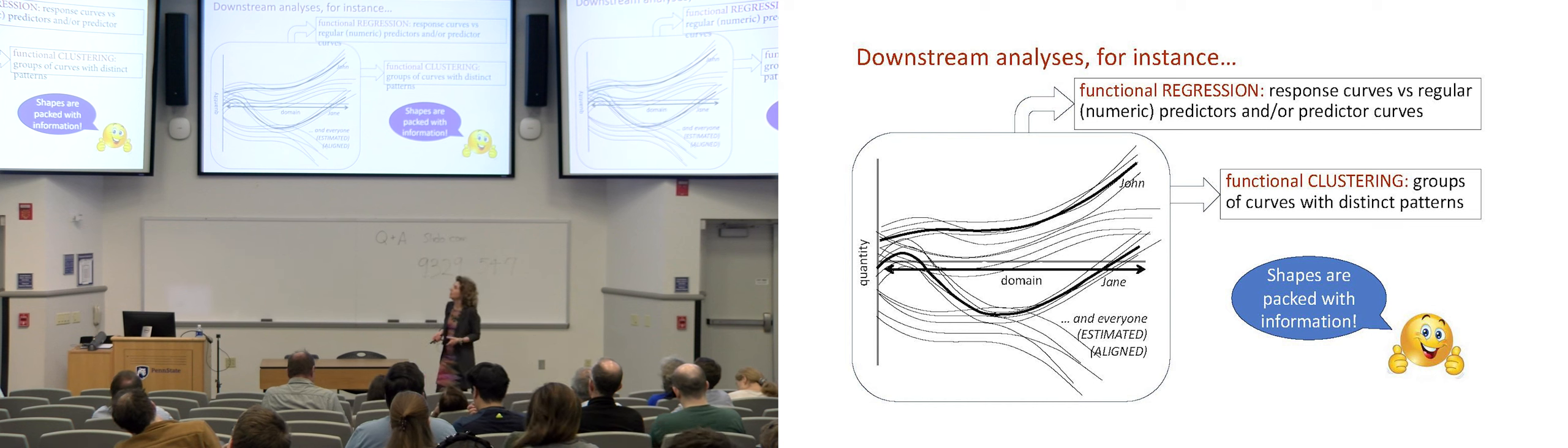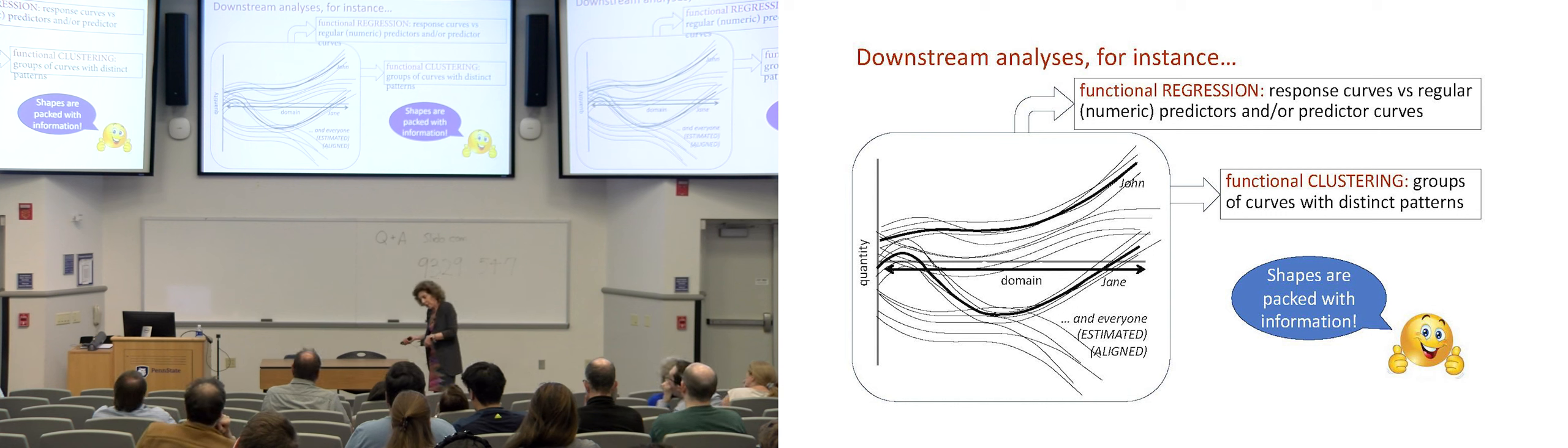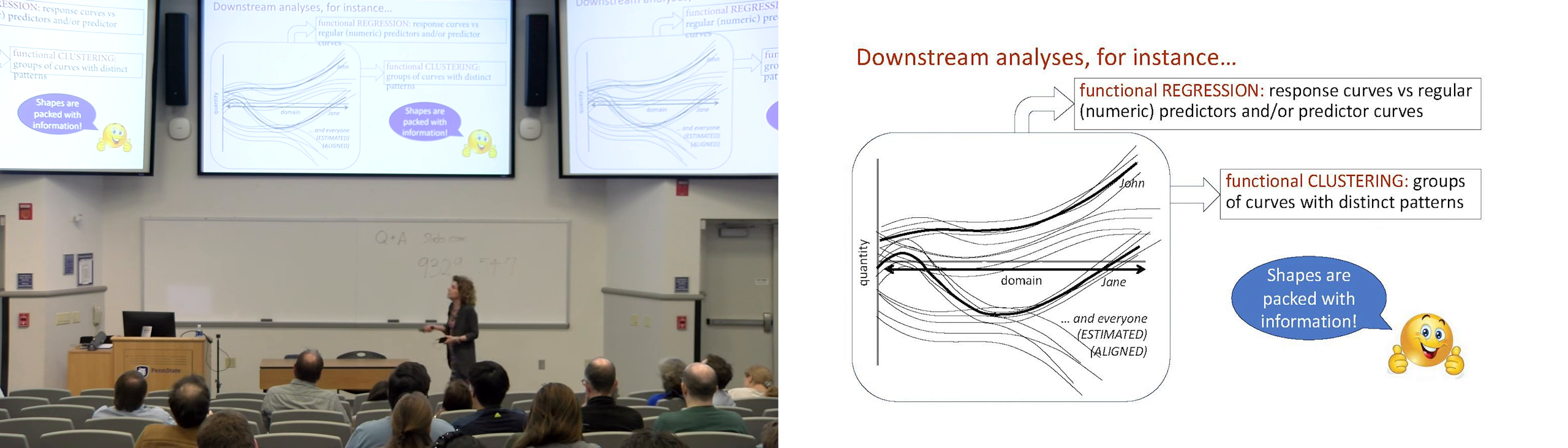So there is a functional version of regression and there is a functional version of clustering. In the functional version of regression, you can do many interesting things. Your response variable can be functional. You can have response curves. And you can regress these response curves on standard numeric predictors. Or you can regress response curves on curves themselves. Or you can have a standard numeric response and regress them on curves and so on and so forth. There are many ways of mixing and matching different types of variables, some of which may be curves and some of which may be standard ones. In functional clustering, what you do is you try and identify some sort of distinct, typical patterns and group the curves depending on which pattern they seem to follow to be closest to.